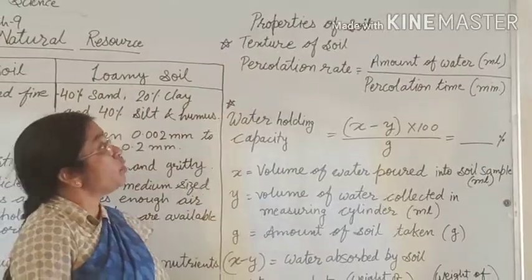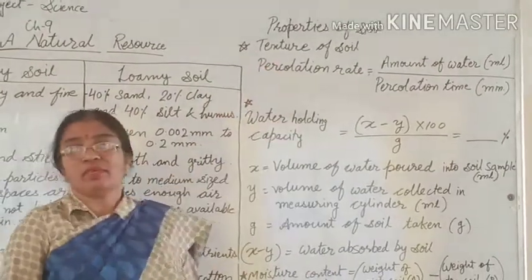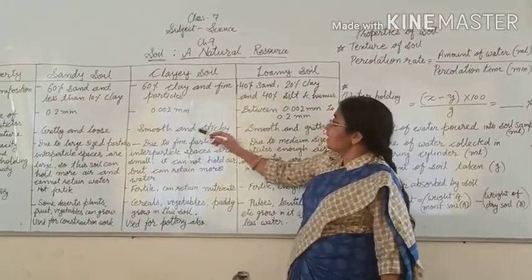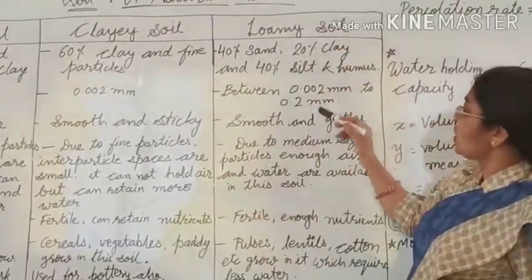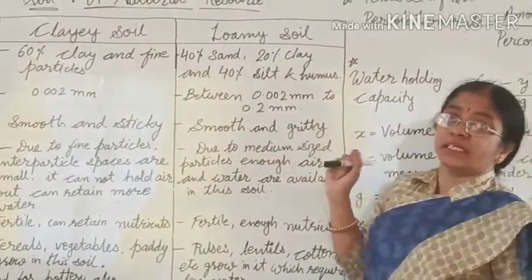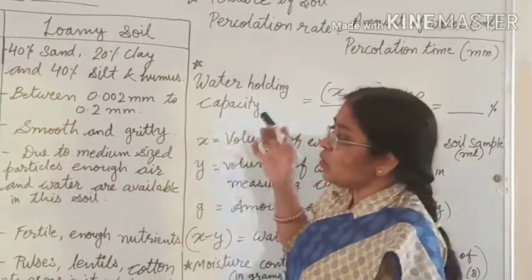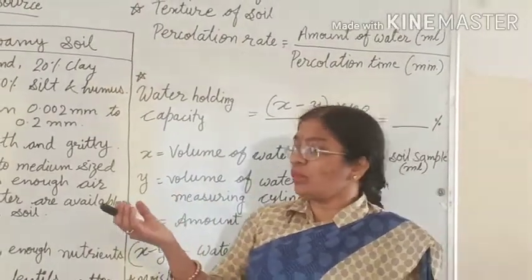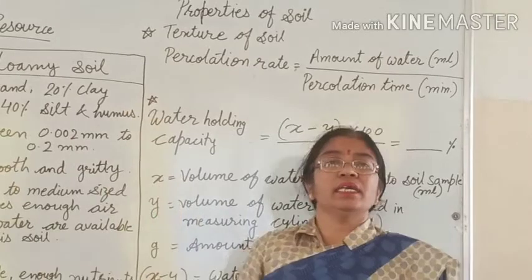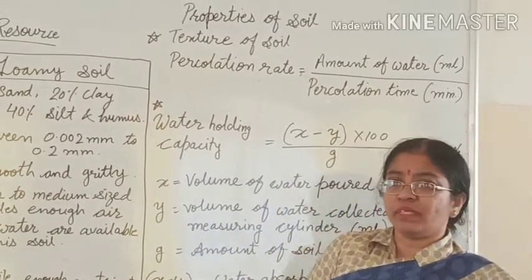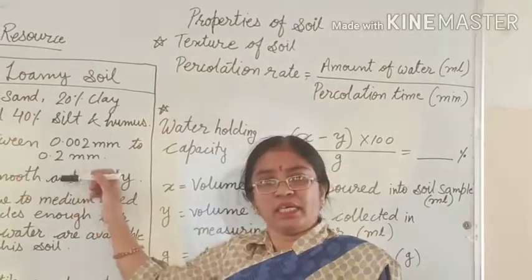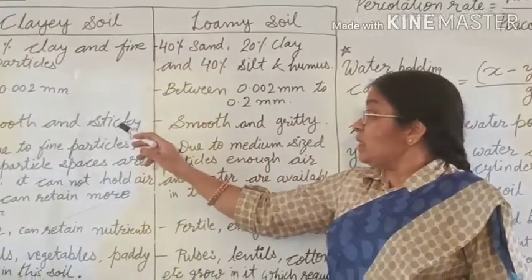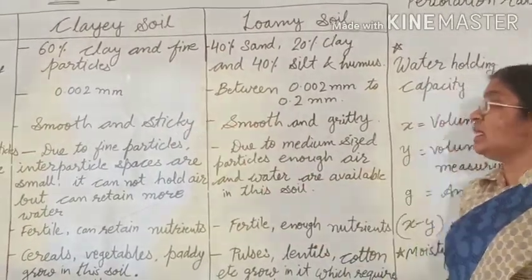Now we will discuss some properties of soil. Regarding texture: sandy soil has gritty and loose texture, clay soil has smooth and sticky texture, while loamy soil has smooth and gritty texture. To feel this, you can do an activity — take soil samples of all three types and feel the particles. When you add some water, clay soil will feel sticky while the other soils are not as sticky as clay soil.